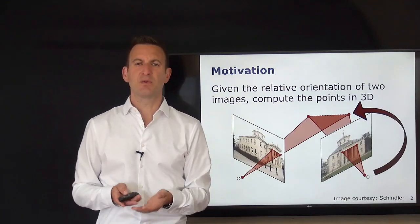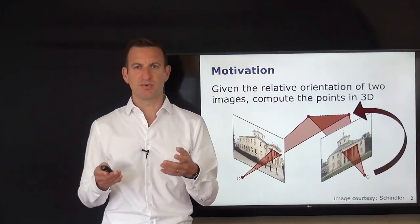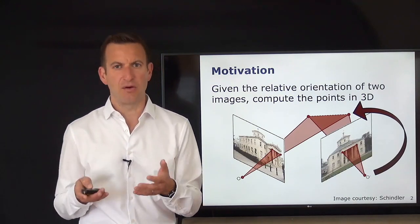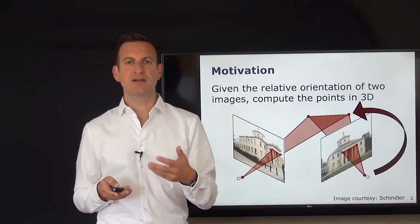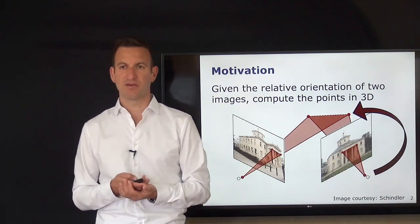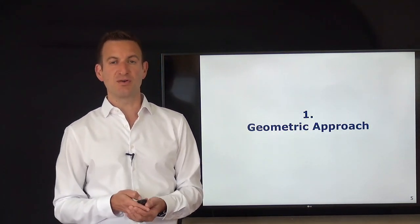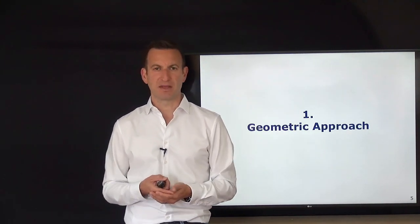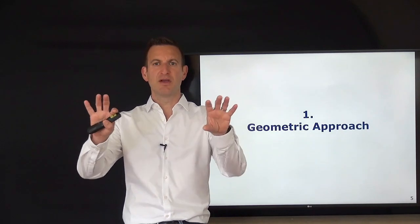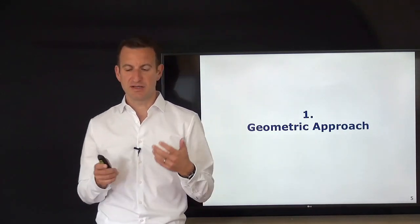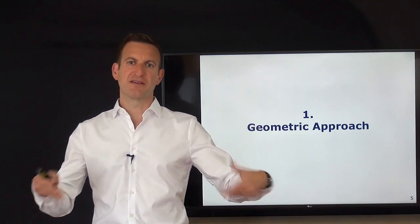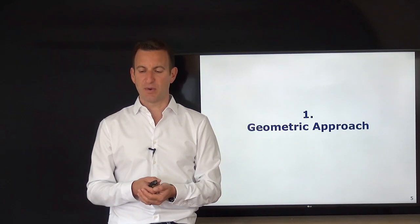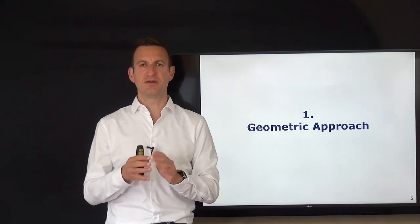We can do this in multiple ways. I want to start with a very simple, purely geometric approach — just basic geometry, math you probably used in school — to actually estimate the locations of the 3D points. Then in the second step, we'll look at a special case when we have a stereo normal pair, two cameras looking in the same direction, where we can directly derive depth from distance and pixel information.